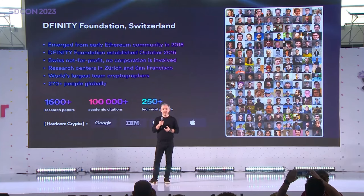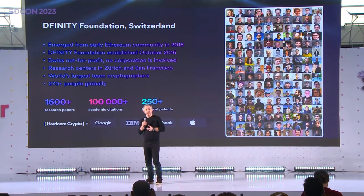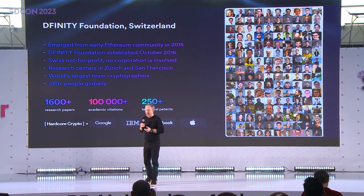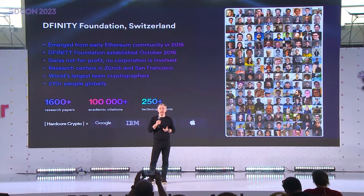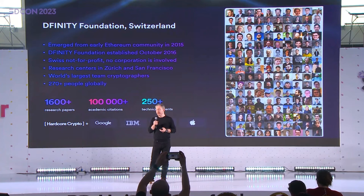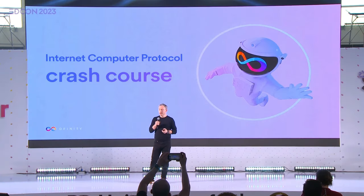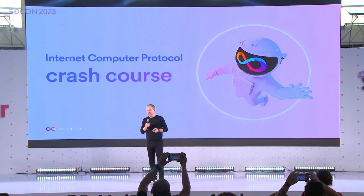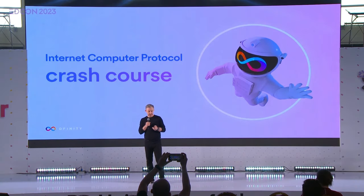I work at the DFINITY Foundation based in Switzerland. There's no company involved in the internet computer project. It was established in 2016, with research beginning in 2015. It's a not-for-profit, and we have the world's largest team of famous and well-cited cryptographers — probably the biggest R&D team in crypto — and it's been running for years, with about 270 plus people globally. I've given you the picture of what it does; now I'm going to run through how it works, and if we've got time, we'll do a quick Q&A.